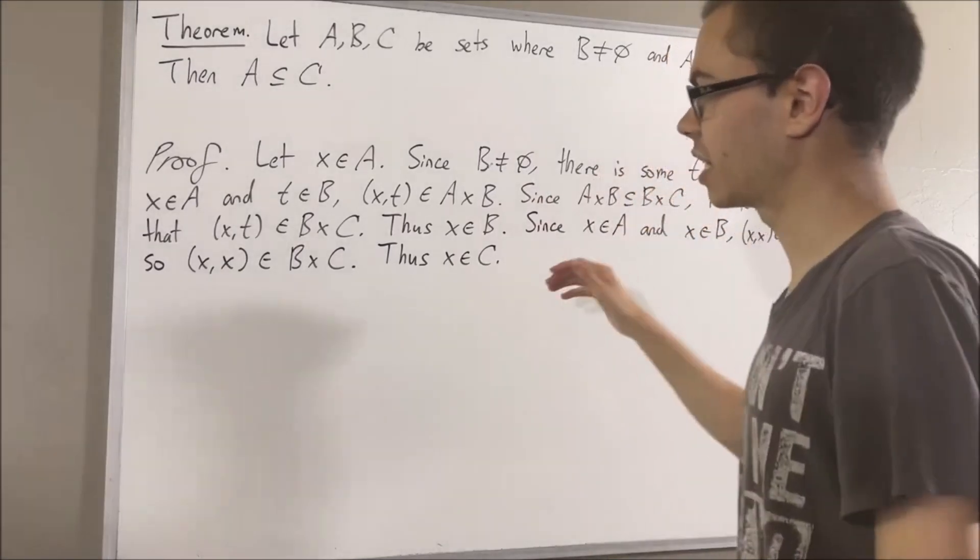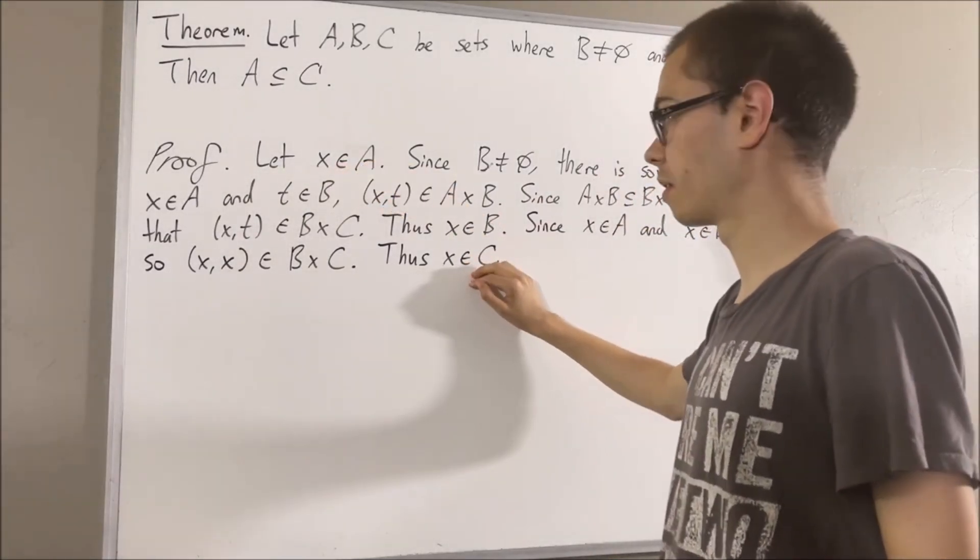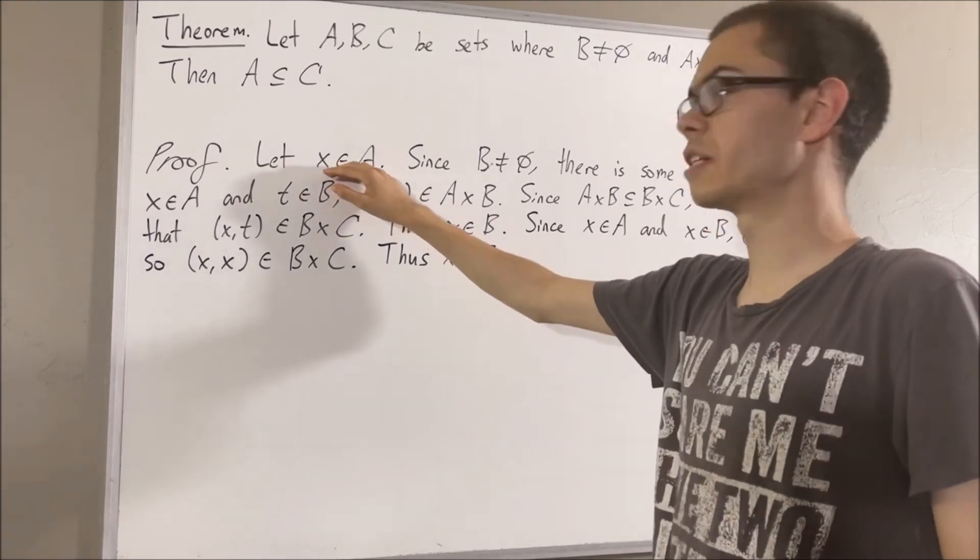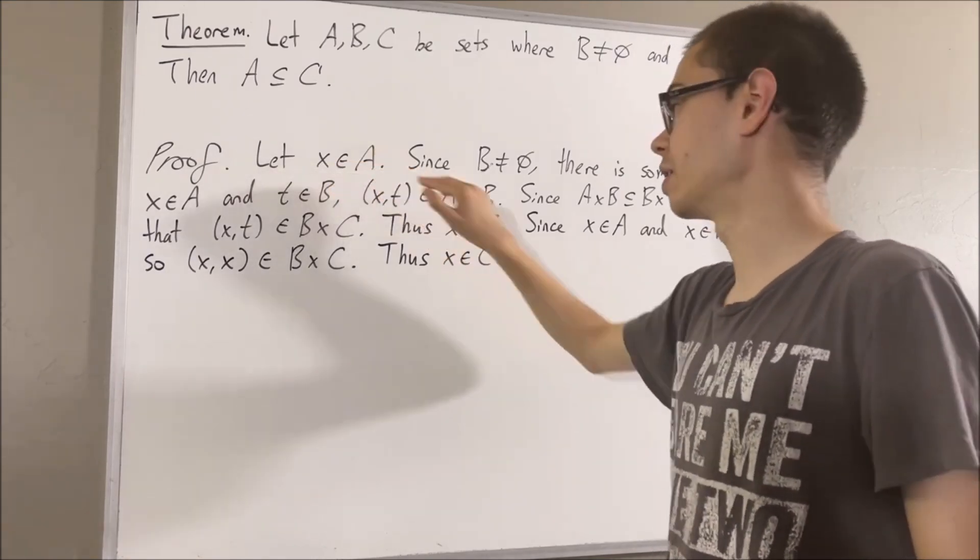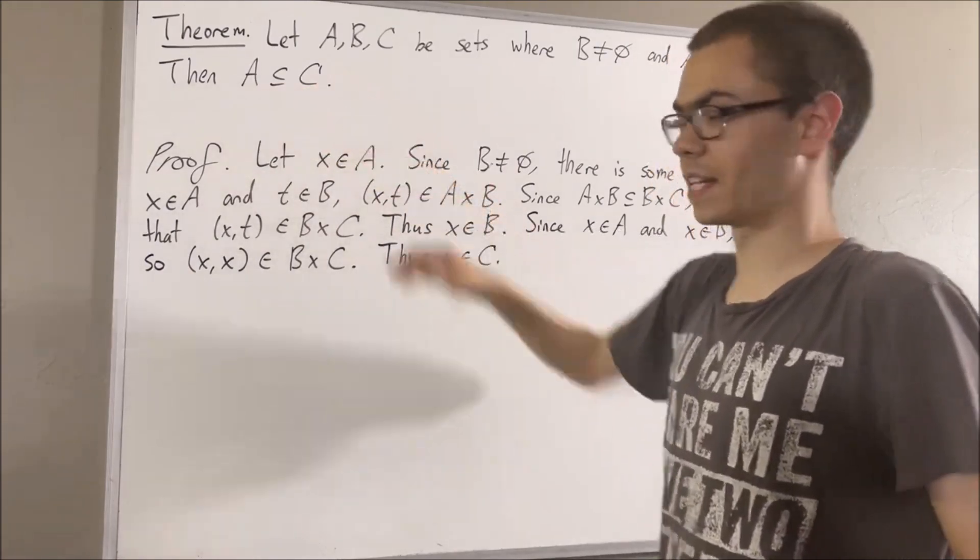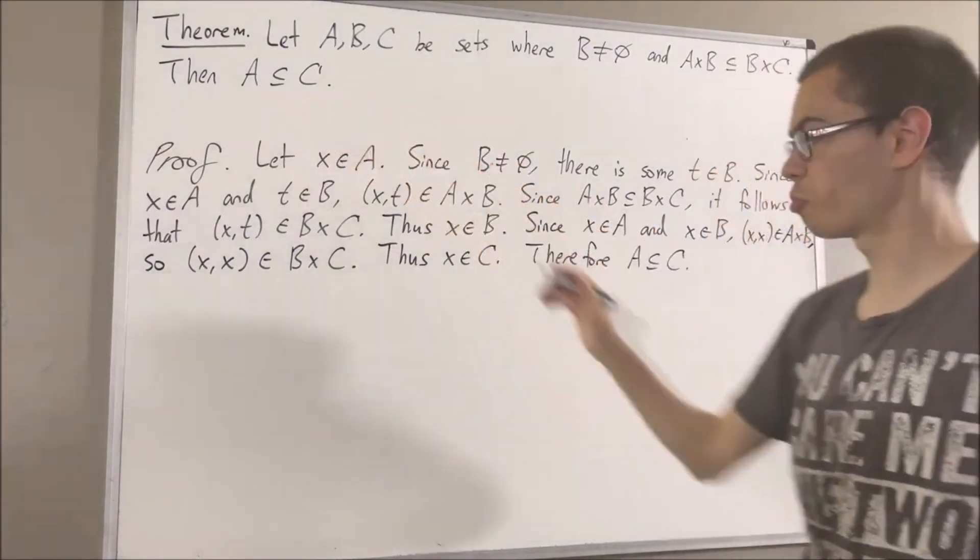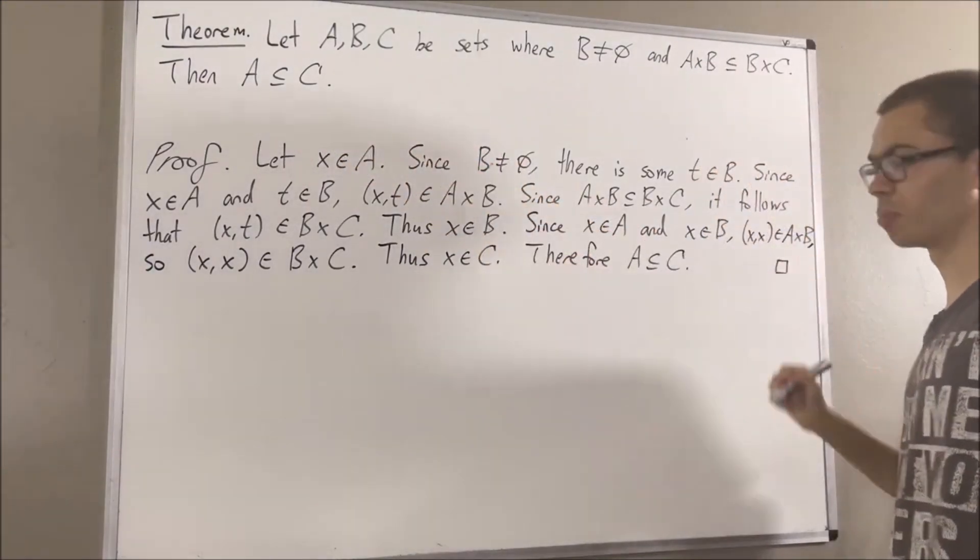Putting this together, we see that under the assumption that X is an element of A, it follows that X is an element of C. Since X was arbitrary, this means we have shown every element of A is also an element of C. In other words, we have shown that A is a subset of C. And that is exactly what we wanted to prove, so this completes the proof.